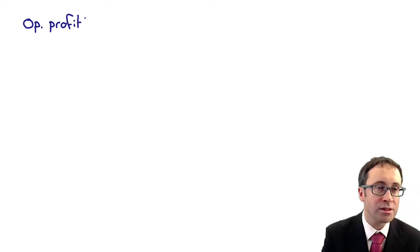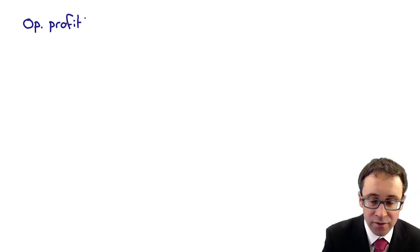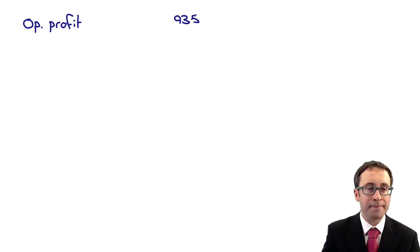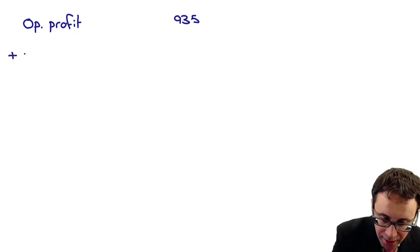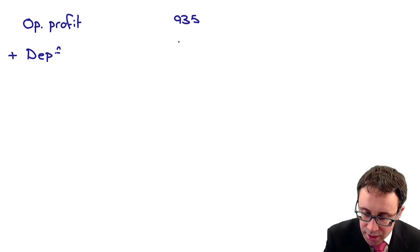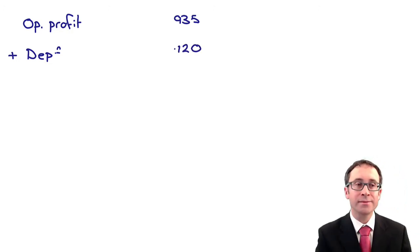So we want to work out the free cash flow first. So there we start off with our operating profit, is that there in terms of thousands, is that 935. We can then go through there and add back any depreciation. So the depreciation that we have is there as 120.